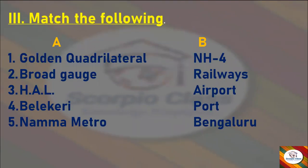Now let's continue with Match the Following. We have Column A and Column B. The answers matched are: Golden Quadrilateral — NH4; Broad Gauge — Railways; HAL — Airport; Belakiri — Port; Namma Metro — Bengaluru. These are the correct answers for the Match the Following section.